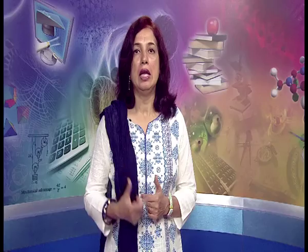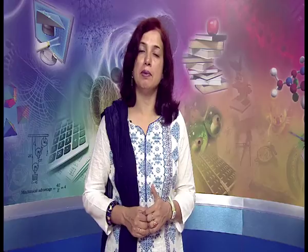After learning about character sets, we need to know about data types. We have integer, floats and character data types. These are the types in which data of different properties and features can be stored. Depending on the data I want to store, I use that particular data type. The first basic data type is integer, short form int. An integer stores a whole number — any number without a decimal point is an integer. Normally, the range of int data is between minus 32768 to 32767. If we want to store numbers larger than these, we use long int.